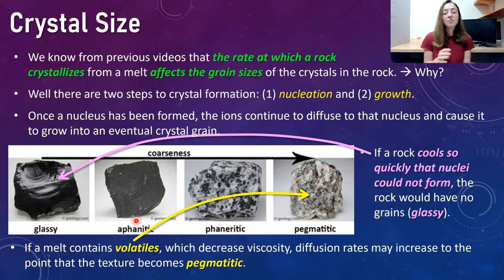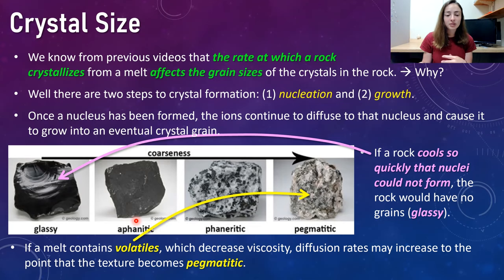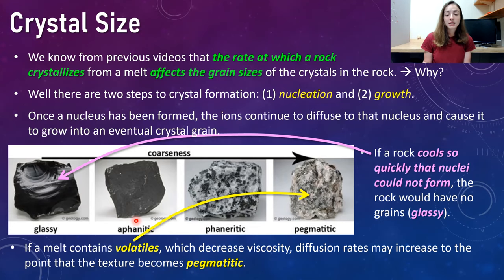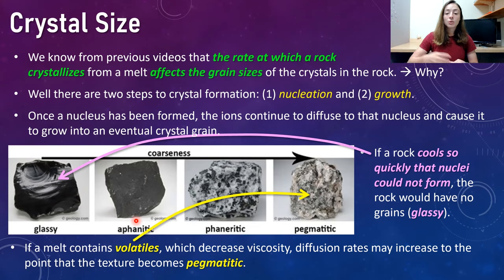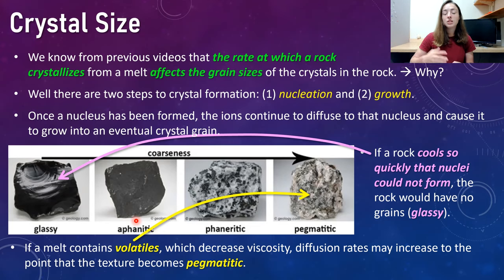Lastly, we have pegmatitic. Pegmatitic is a really coarse-grained texture that forms huge crystal grains. This happens if a melt contains volatiles, which decreases the viscosity of the melt, and therefore diffusion rates may increase to the point that the texture becomes very coarse-grained or pegmatitic. The rock is cooling slowly, diffusion rates are very high, growth of crystals is really fast, whereas nucleation is not as fast — so growth rate over nucleation rate. The diffusion becomes even faster with a decrease in viscosity, and therefore you get this pegmatitic texture.